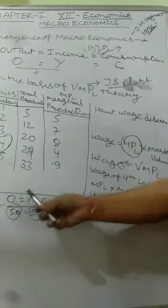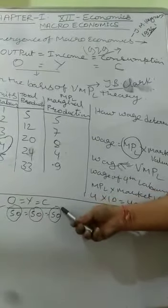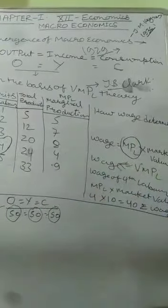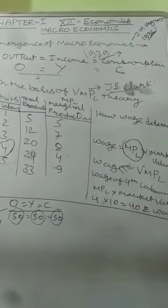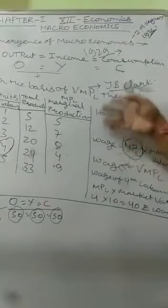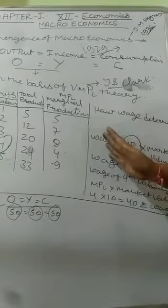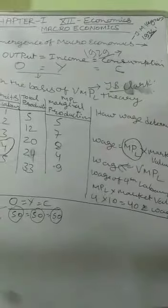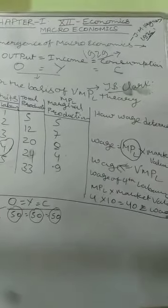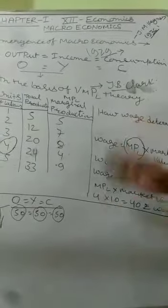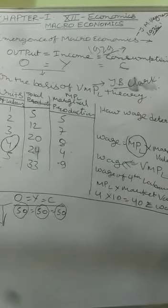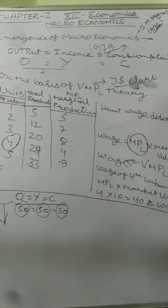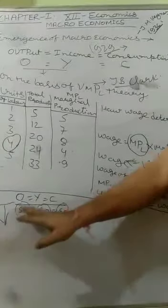No one had any imagination. Everyone believed O equals Y equals C: as much as is produced, that much income is generated, and that much is spent. Daily the factory opens and daily people have employment. The whole economy is in full employment. There was no problem of excess production or excess supply. O equals Y equals C.